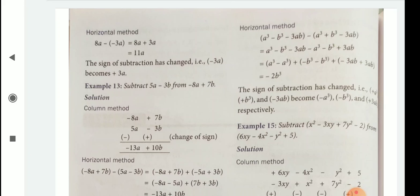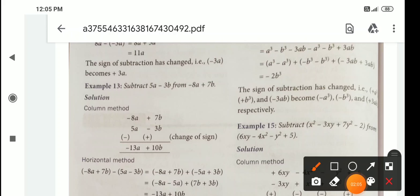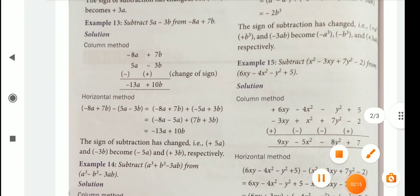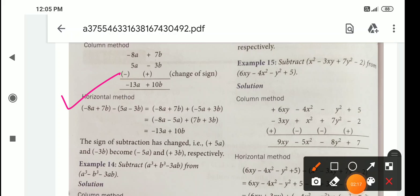Then comes to example 13. Subtract 5a minus 3b from minus 8a plus 7b. So first of all children, which one is easy for you? You do. Maybe column method or maybe horizontal method. You see, horizontal method is very easy.